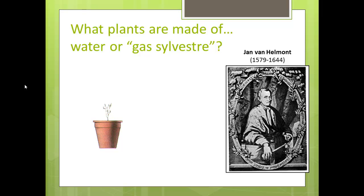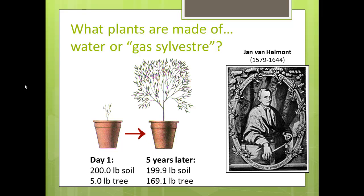He put his willow tree in a pot and very carefully measured how much the tree weighed and how much the dirt in the pot weighed. On the very first day, he had a five-pound tree and 200 pounds of dirt. Then he carefully watered his tree every day — that's all he did — and didn't add anything else to the pot or the tree. He let it grow, and after five years — yes, he was a very patient man — he took out the tree and dirt, weighed everything carefully, and found he had a tiny bit less dirt than he started with, about a tenth of a pound less.